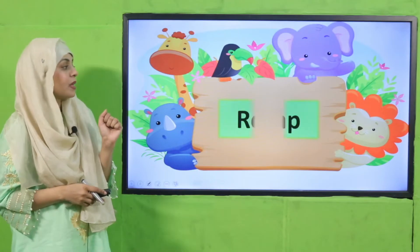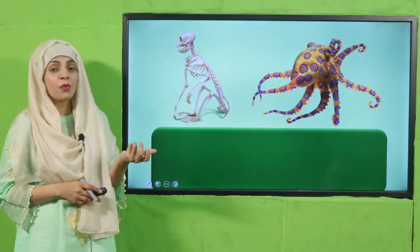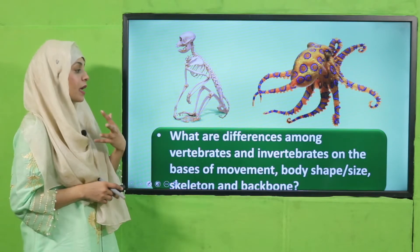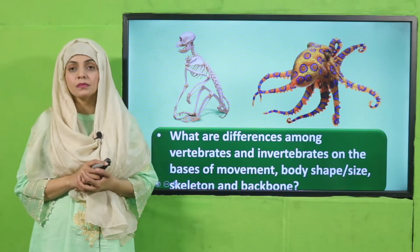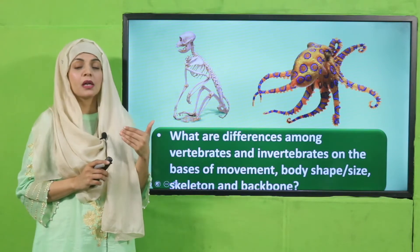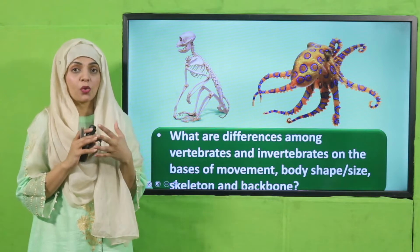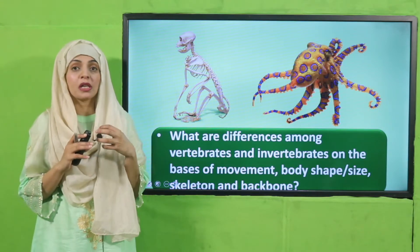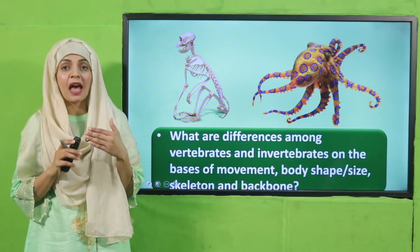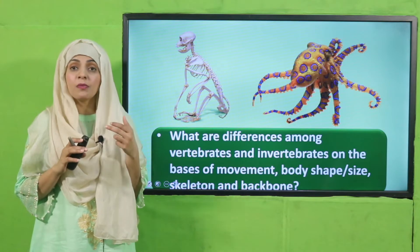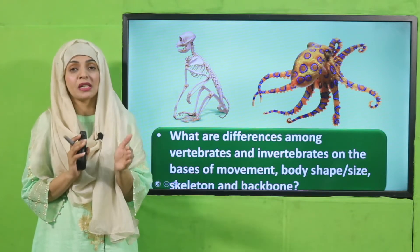Let's quickly move forward towards the recap first. In the previous lecture, we discussed the differences among vertebrates and invertebrates. Quickly tell me: what are the differences on the basis of movement, body shape, size, skeleton, and backbone? In invertebrates there is no proper mode of movement, whereas vertebrates have a proper mode of movement. Vertebrates have well-developed organs and body, whereas invertebrates do not. Invertebrates have no backbone; vertebrates have a backbone. Invertebrates have an exoskeleton, whereas vertebrates have an endoskeleton.